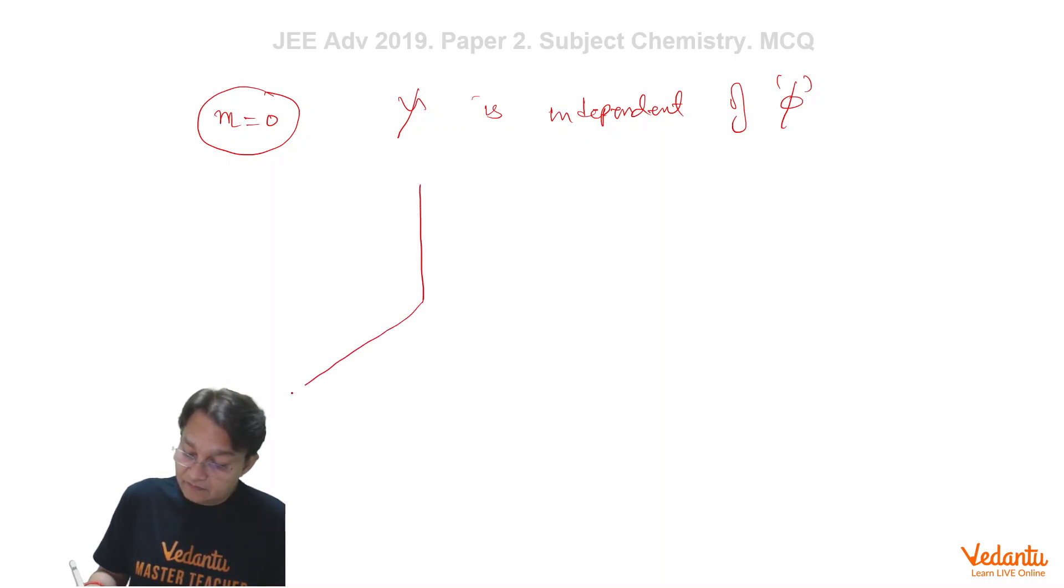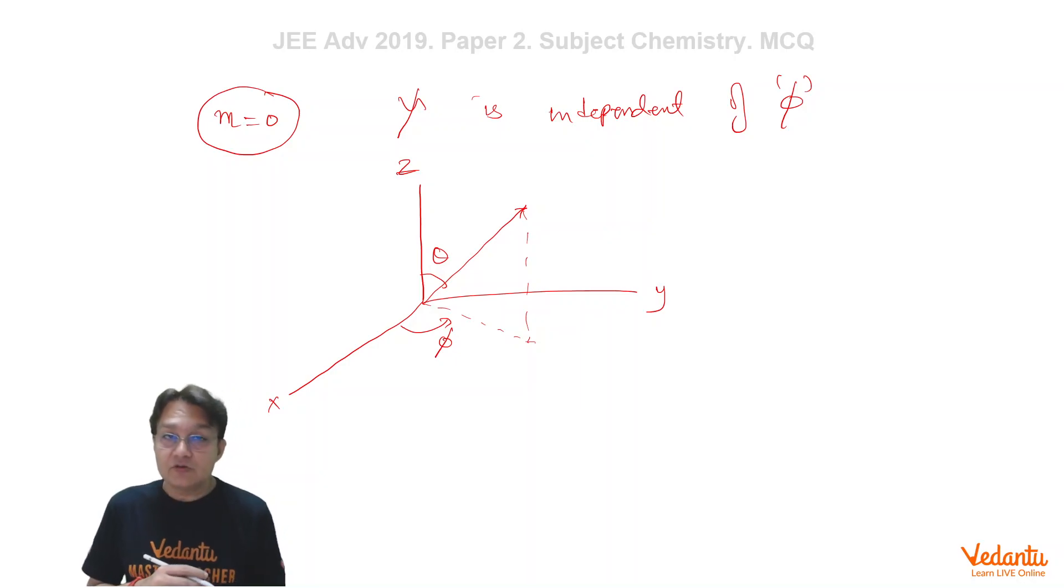And if it is independent of phi, that clearly means that it must be Z orbital. Why? Because this is the situation that if this is X axis, this is Y axis, this is Z axis, this angle is theta, and the projection of this is called phi. So being independent of phi means what? The orbital must belong to the Z axis.